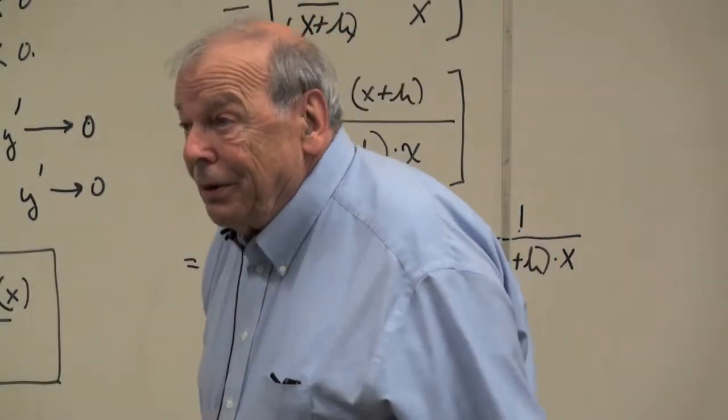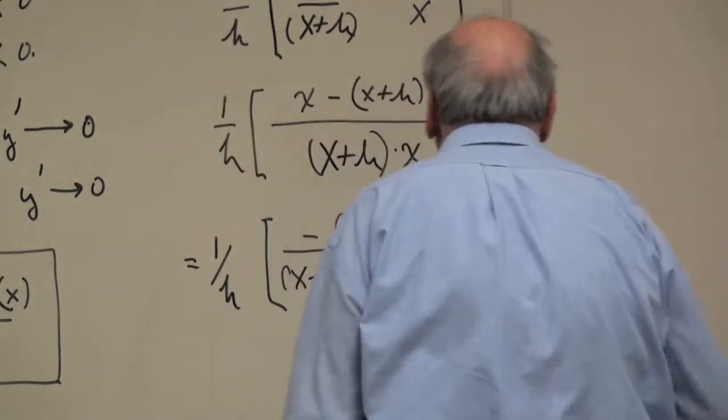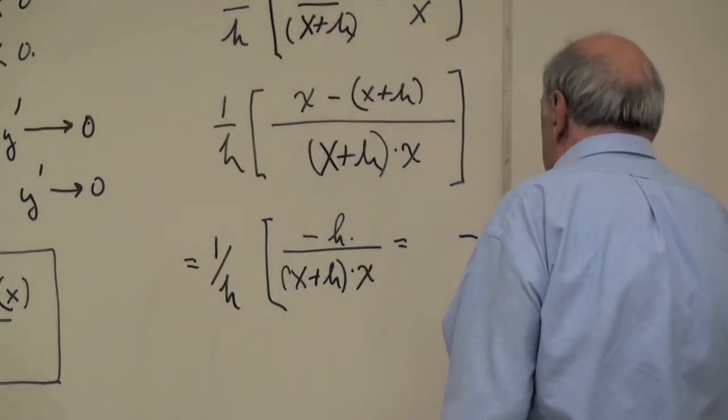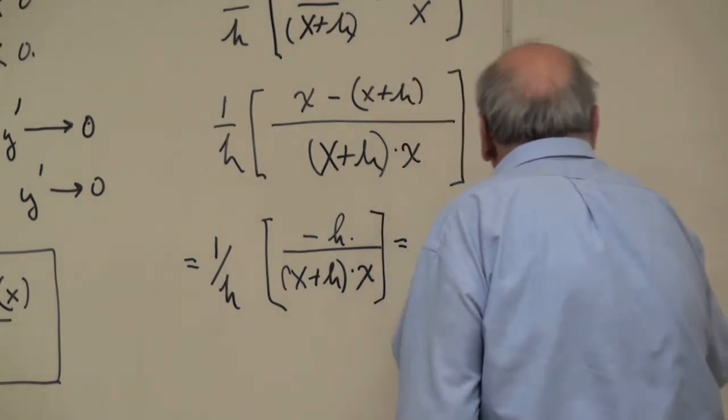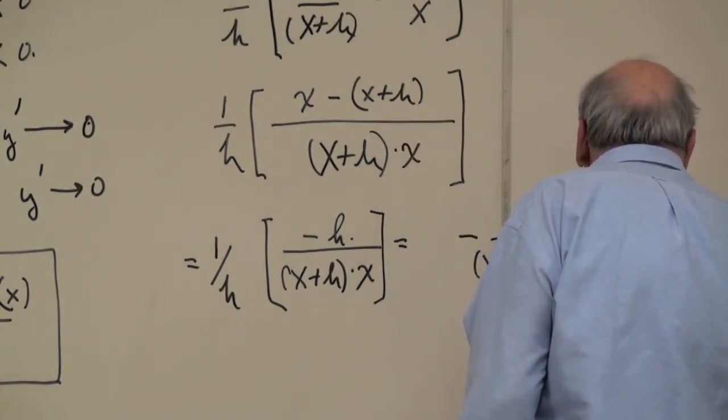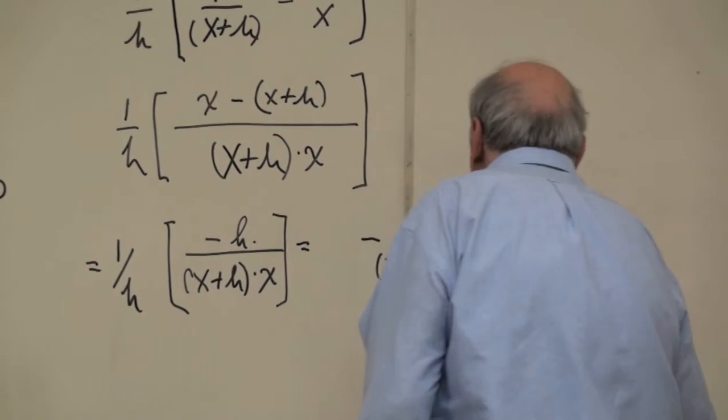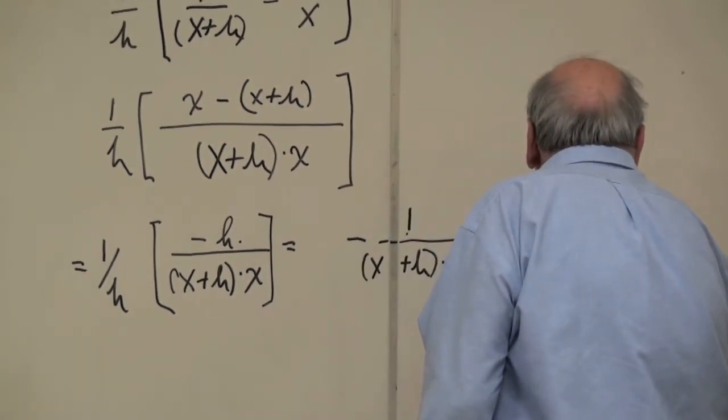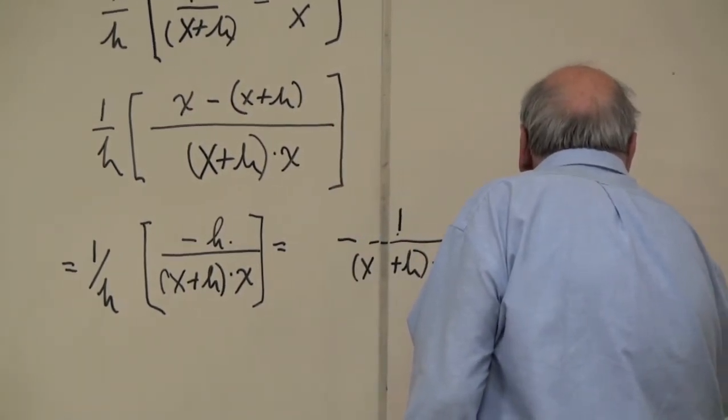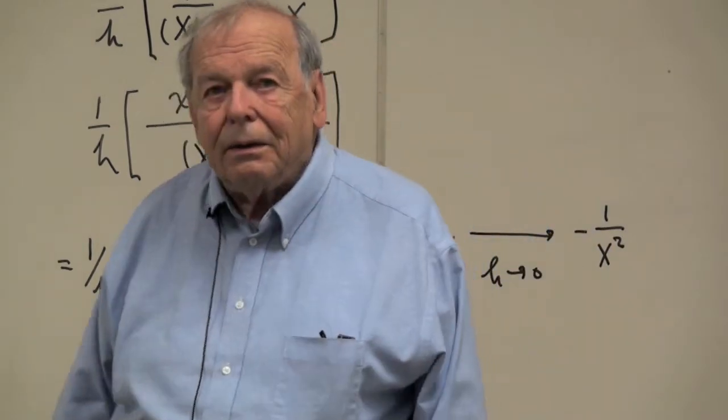And now what do I do? I let h go to 0. Now here there's a missing, I let h go to 0. And this becomes minus 1 over x squared. Correct?